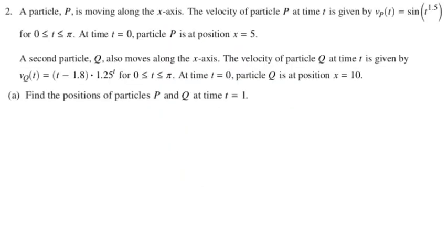A particle P is moving along the x-axis. The velocity of particle P at time t is given by Vp. I hate the problems where they use subscripts, but they've been doing it more and more in recent years, so I guess we got to get used to it. Vp is equal to sine of t to the 1.5 between 0 and pi. At t equals 0, the particle is at 5. There's another one, particle Q, also moving on the x-axis. Velocity of Q is given by Vq, which is a gross function. It's the quantity t minus 1.8 times 1.25 to the t between 0 and pi again. At t equals 0, particle Q is at 10.